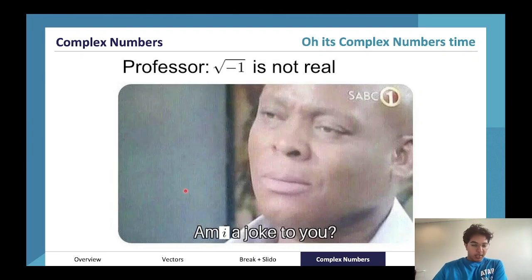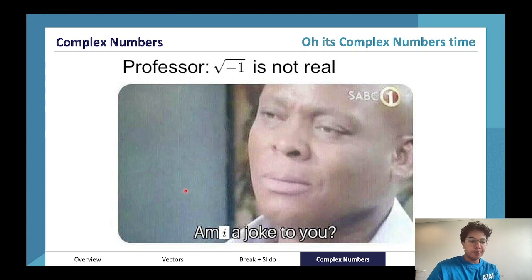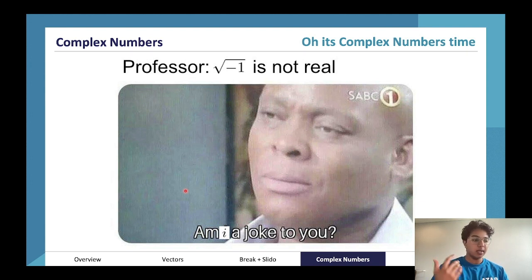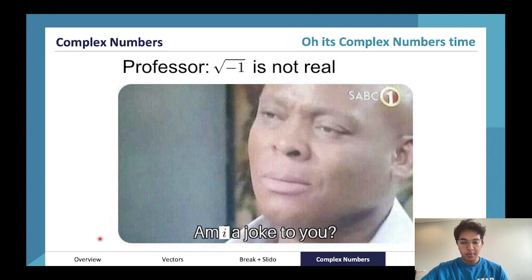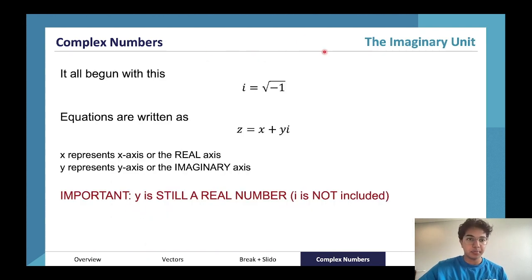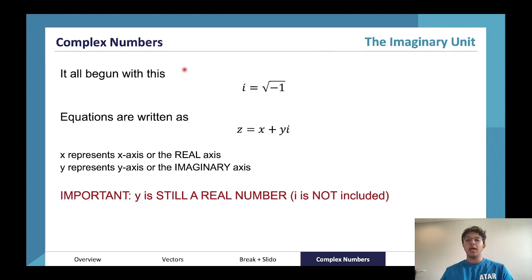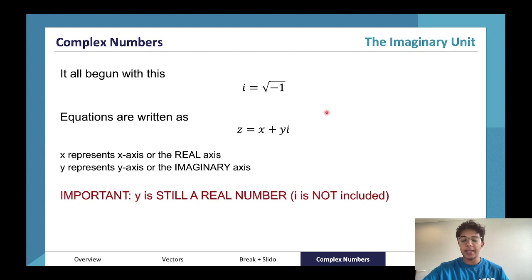Complex numbers time. Complex numbers are generally a number that includes some real numbers and some multiple of the imaginary number. The imaginary number is represented by i, and it is the square root of negative one. Complex numbers are written as these equations, with x representing the real axis.